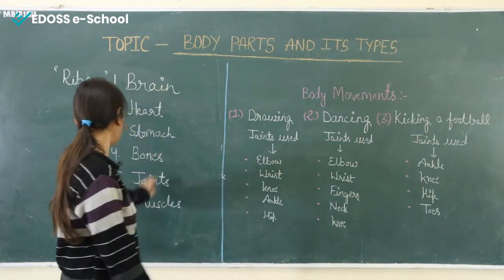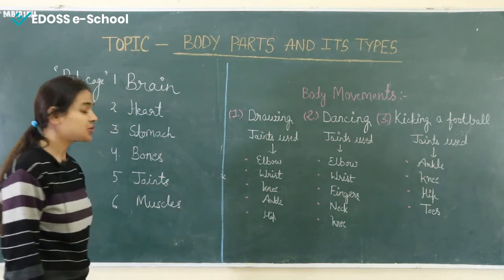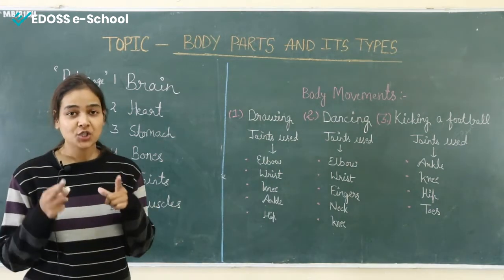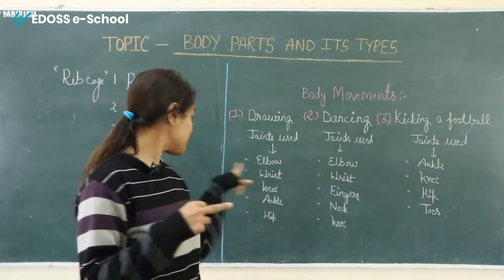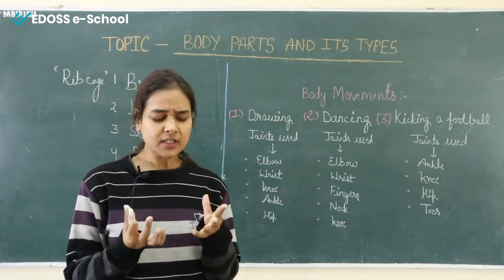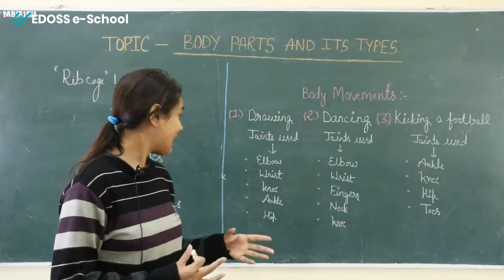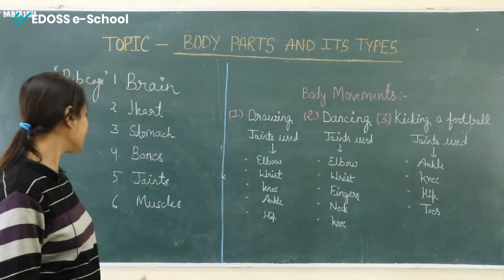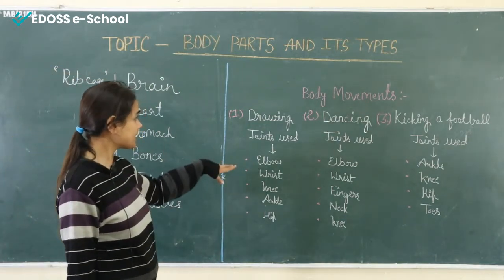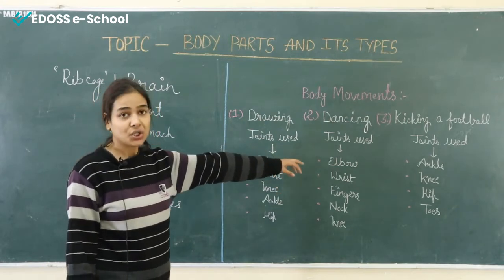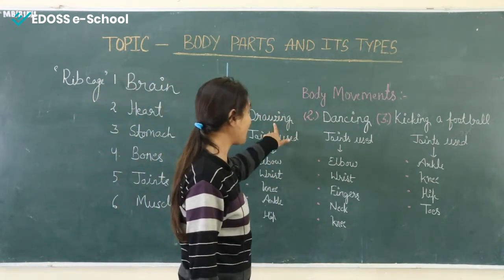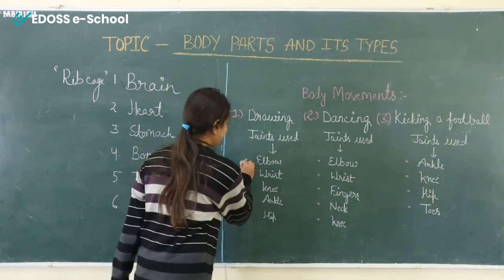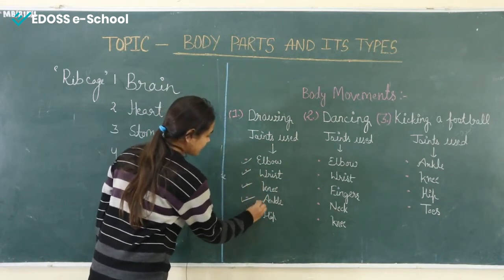Now let's talk about joints. What are joints? Joints are formed when two bones meet. Joints and muscles together control our body system. Some examples of joints are wrist, elbow, and ankle. When we are drawing, the joints used are elbow, wrist, knee, ankle, and hip.